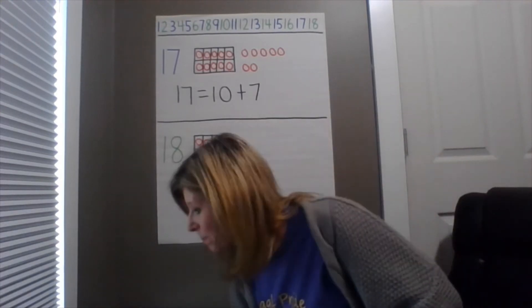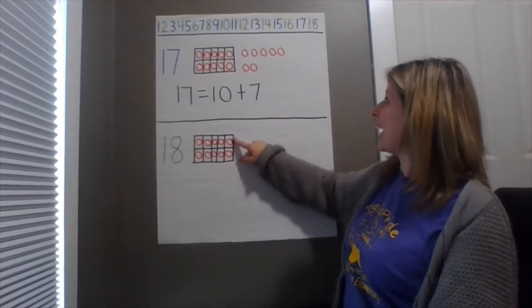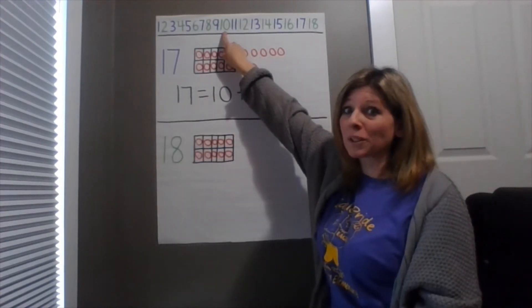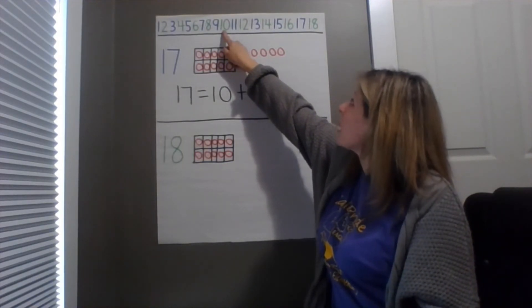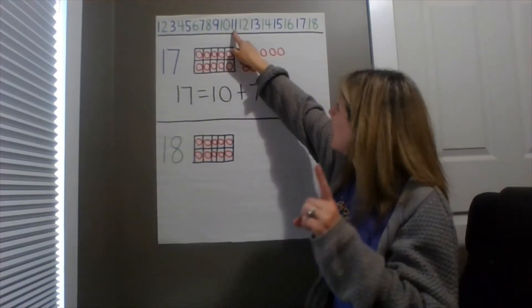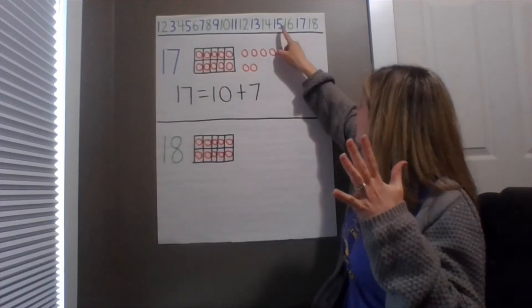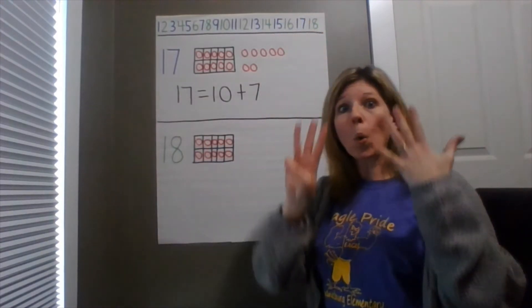So now we have to figure out how many more. How many more do we have to add to 10 to get to 18? Okay. Let's see. Here we are at number 10. Now let's count to get all the way up to 18 and see how many more we're adding. Alright. 10, 11, 12, 13, 14, 15, 16, 17, 18. Whoa!